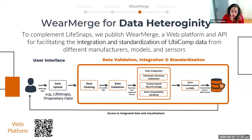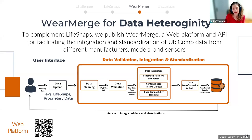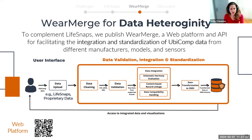To complement our LiveSnaps contribution, we also released the WearMerge platform and API for facilitating integration and standardization of ubicomp data from different manufacturers, models, and sensors. A researcher who wants to merge an existing dataset from, say, Apple Watch devices with the LiveSnaps Fitbit dataset can upload their data to our platform, which will automatically perform basic data cleaning, data validation — recognizing the manufacturer's representation format — data integration, and finally data transformation to the open mHealth standard for digital health data. This way, data from diverse manufacturers can be converted into a common format, facilitating interoperability.